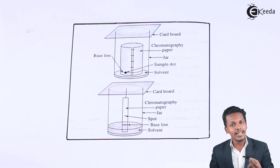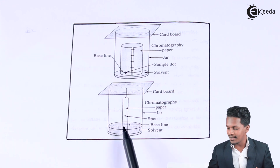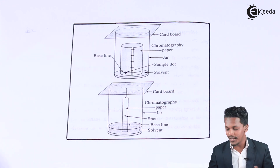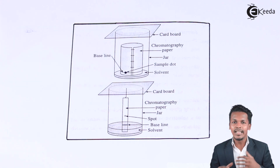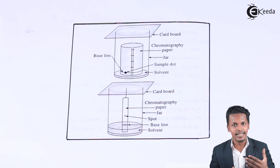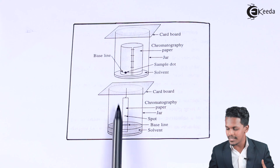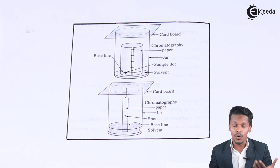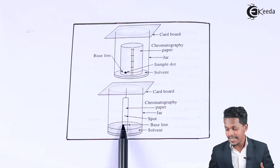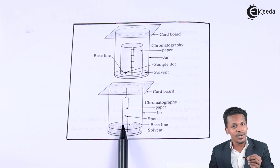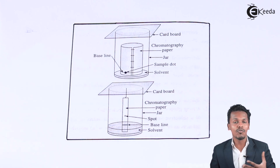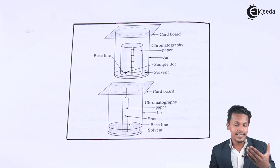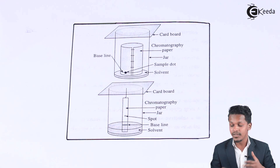We have to spot the organic mixture on the baseline as shown here. Due to capillary action, the solvent will rise through this paper, and not only the solvent — the organic spot that we have placed on the baseline will also rise. After rising, we can find that the components get separated.